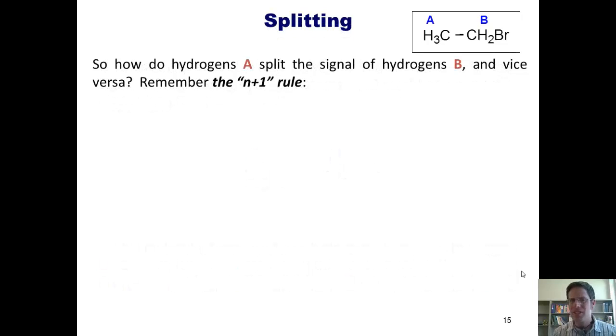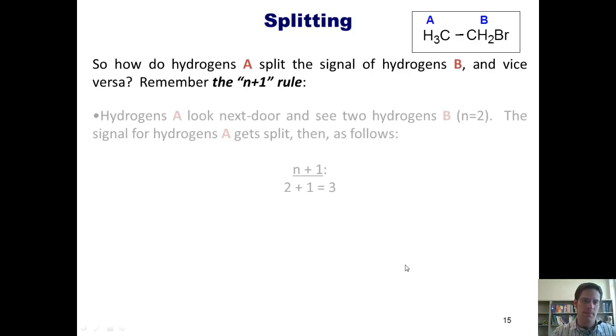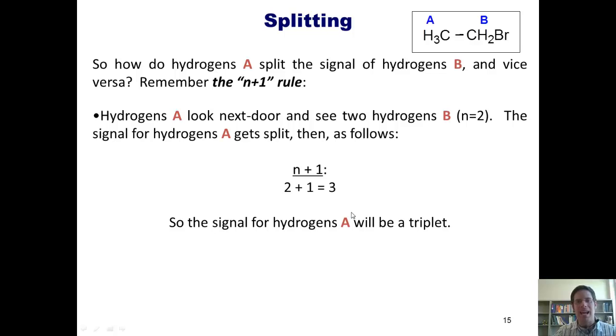So how do hydrogens A split the signals of hydrogens B and vice versa? I want you to remember the n plus 1 rule. Hydrogens A look next door and see two hydrogens B. The signal for hydrogen A then gets split as follows: 2 plus 1 equals 3. So the signal for hydrogens A will be a triplet.